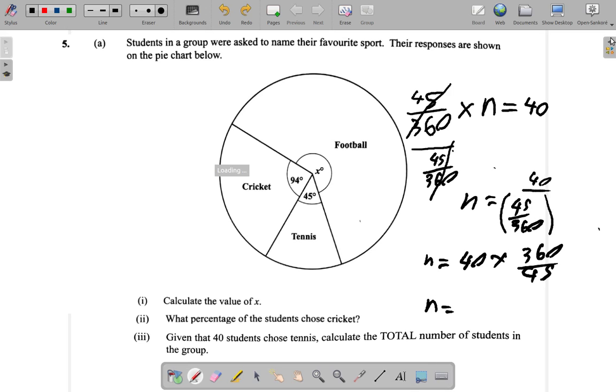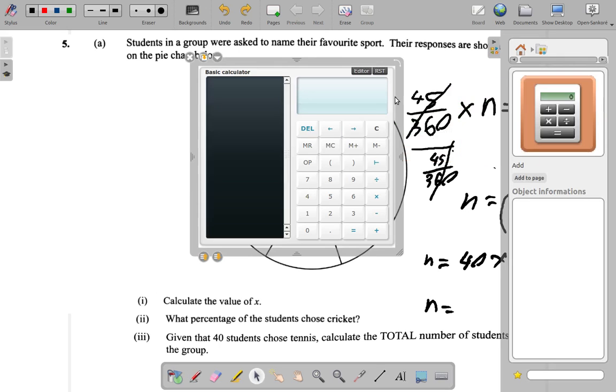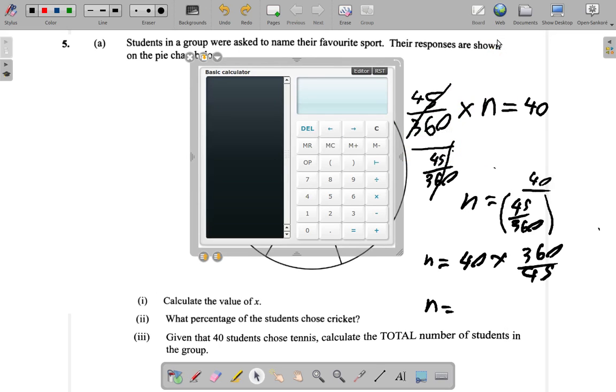So in this case, let's use a calculator and see what the answer is. It's 40 multiplied by 360. That's what happens up top.